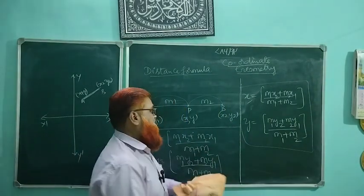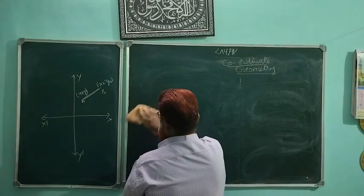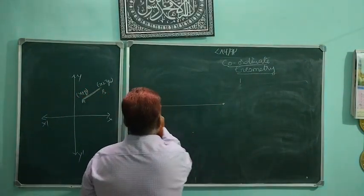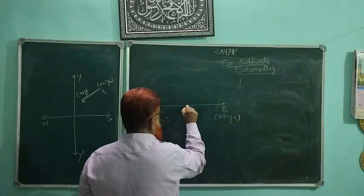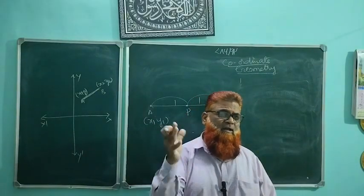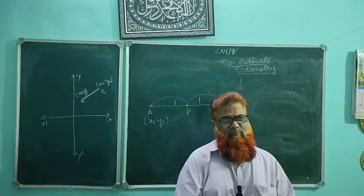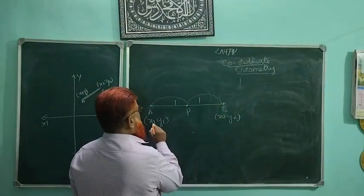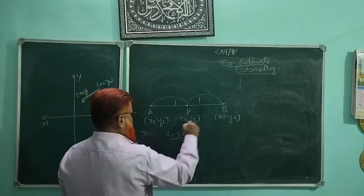I hope you understand this easy method. This is the section formula. Now the third formula is the midpoint formula. The midpoint formula is simple — it is an average, the sum of two values divided by 2. Consider a line with A having coordinate x1, y1 and B having coordinate x2, y2. The point P is the midpoint of AB, meaning it divides the line in the ratio 1:1.